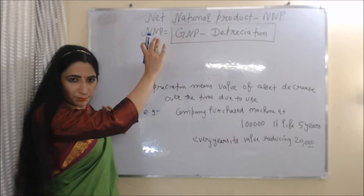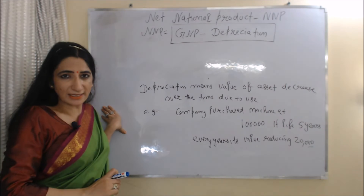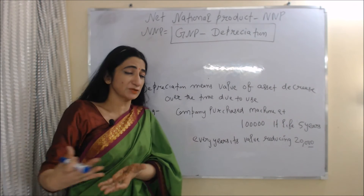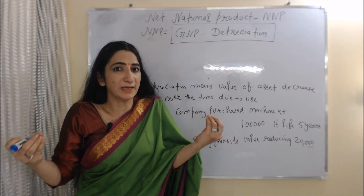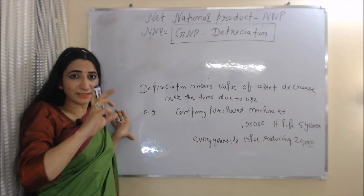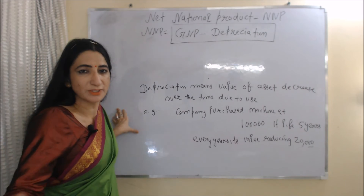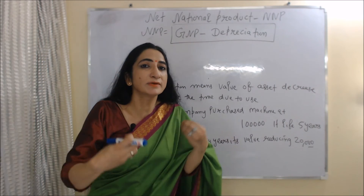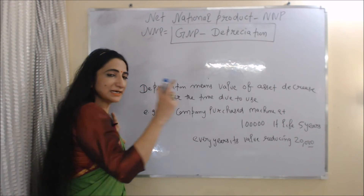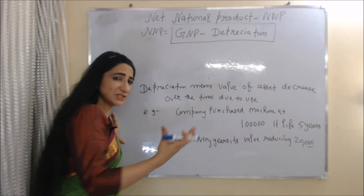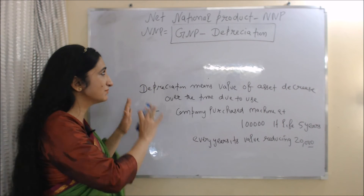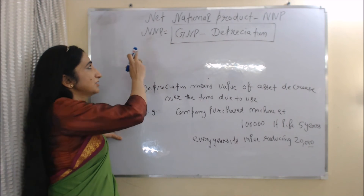Now we will talk about net national product, or NNP. NNP = GNP − Depreciation. Depreciation means the value of an asset decreases over time due to use. For example, a company purchases a machine at 1 lakh and its life is only 5 years, and every year the machine's value reduces by 20,000. This 20,000 is called depreciation, and when we subtract depreciation from GNP we get the value of NNP.